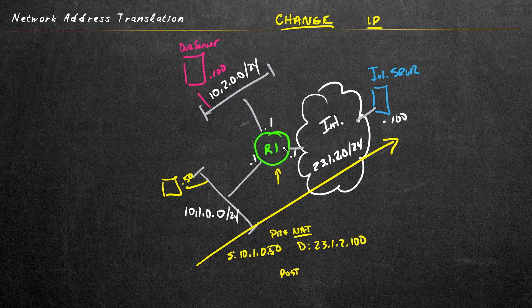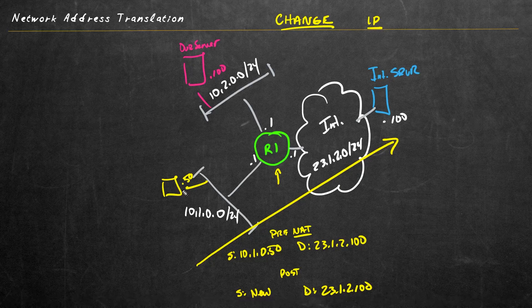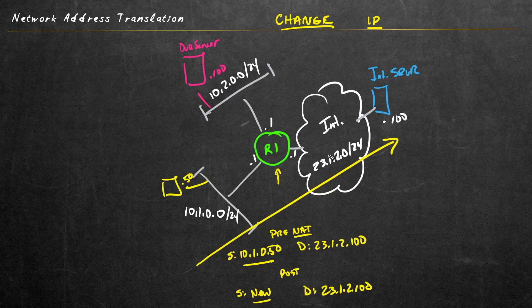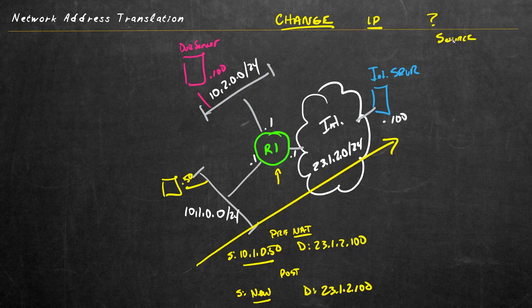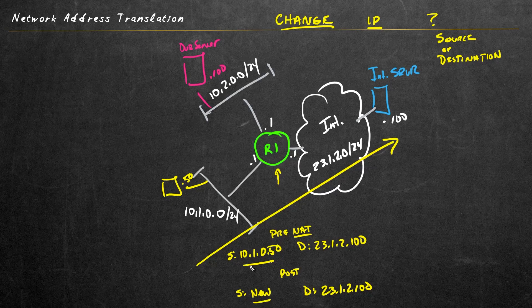Post-NAT, after it goes through router one towards the server, the source address would be swapped out with something new — that's what we're changing. The destination address would still be 23.1.2.100, because the client really is going to that server. We swap out the original source address with a new routable address that this company has been assigned on the internet. This is an example of source address translation, where we're swapping out the source address on that initial flow of traffic.